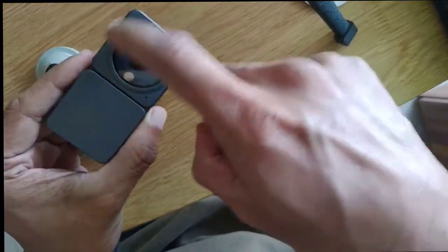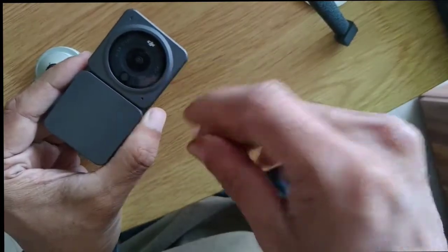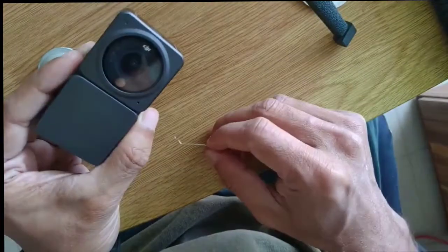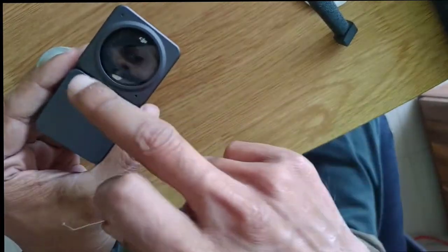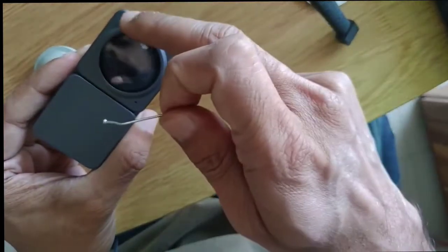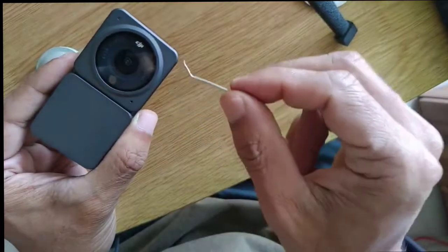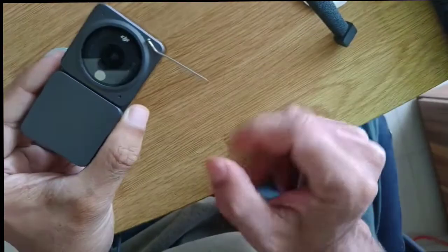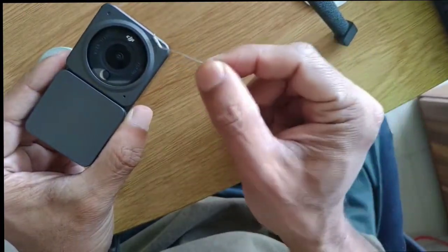Now, the thing is that the front of the camera module is actually magnetic. There's two magnets, one here and one here. And here and here, there's no magnet because the LED is here and the mic is here. So you can see, it sticks here because it's magnetic.